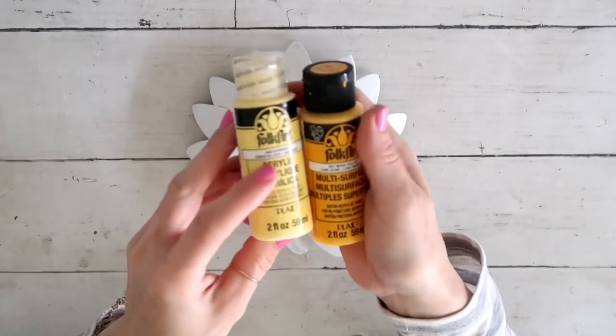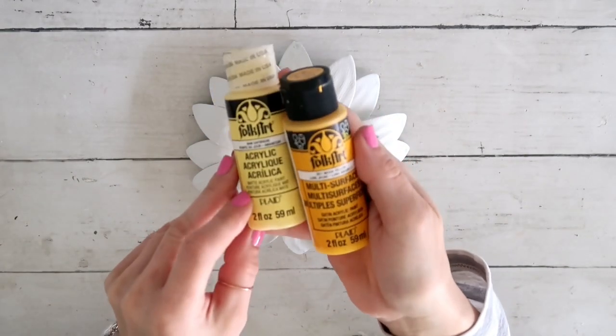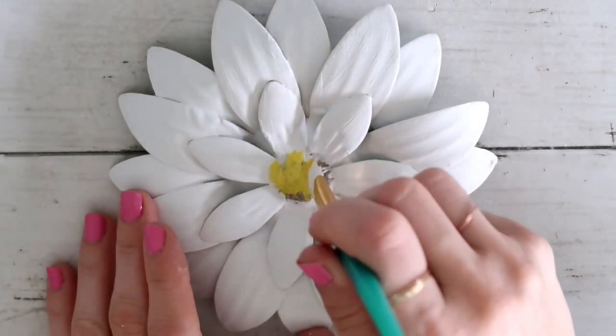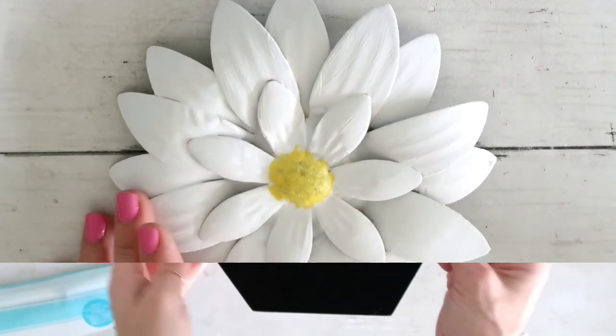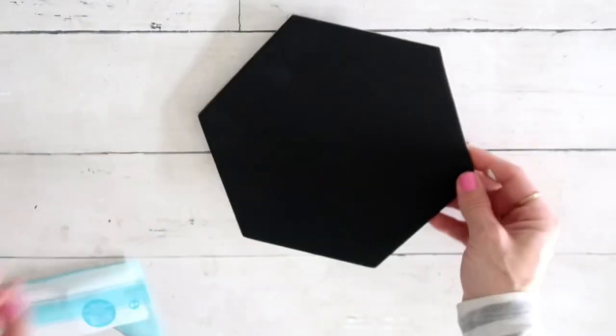Now that the white part is done, this is how it looks like. I'm going to mix these two shades of yellow, or one is almost like orange, and I'm going to dab it in the middle. Now I think it definitely looks like a daisy.